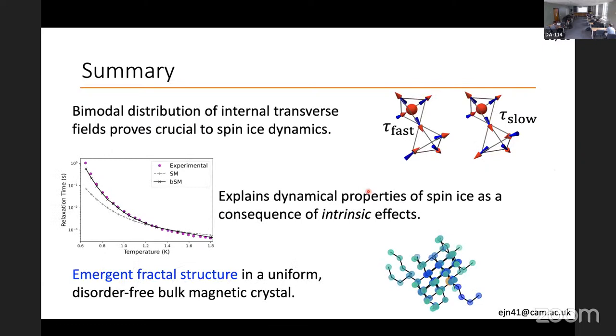That's really what I wanted to tell you. What we have seen is that we have this bimodal distribution of transverse fields, where some spins neighboring monopoles have a much smaller transverse field and therefore smaller tunneling element. We can then introduce this to the dynamics and actually explain some of these puzzles that have been around in the field for a very long time and match experimental measurements incredibly well, with a single fitting constant. And perhaps most excitingly, what we find is that all of this is explained by the existence of an emergent dynamical fractal in this uniform disorder-free bulk system. I hope that was interesting and hopefully you have more questions for me. Thank you very much.